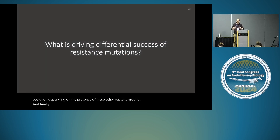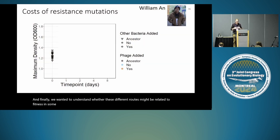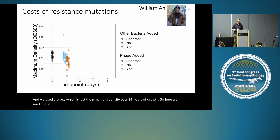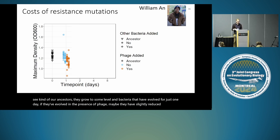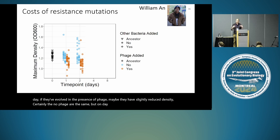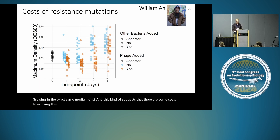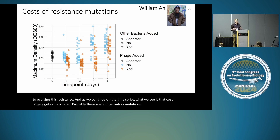Finally, we wanted to understand whether these different routes might be related to fitness. We took bacterial isolates and measured how densely they grow in isolation — no phages, no competitors — using maximum density over 24 hours as a proxy. Ancestors grow to some level; bacteria that evolved in the presence of phage for just one day show slightly reduced density. By day two there becomes a really pronounced difference — these bacteria are growing quite poorly even in the exact same medium, suggesting there are costs to evolving this resistance. As we continue along the time series, that cost largely gets ameliorated, probably due to compensatory mutations allowing the bacteria to catch up with compatriots who didn't face phage pressure.